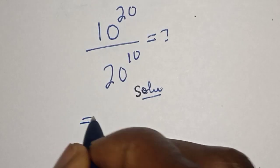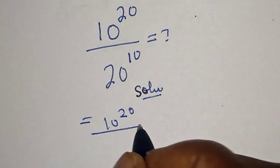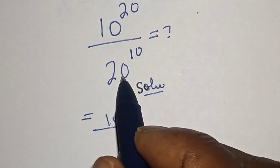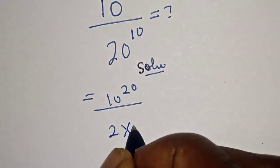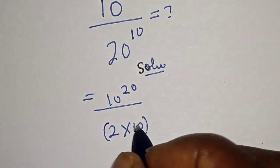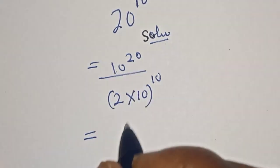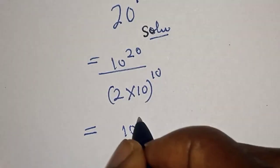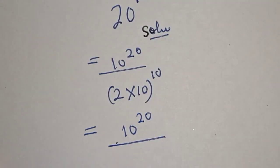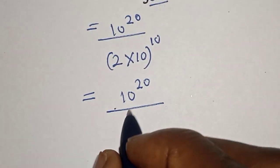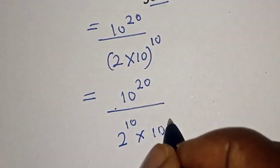10 raised to power 20 over 20 raised to power 10 can be written as: 2 multiplied by 10, raised to power 10. And this is equal to 10 raised to power 20 over 2 raised to power 10 multiplied by 10 raised to power 10.